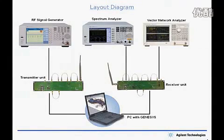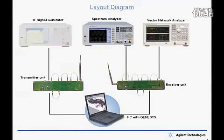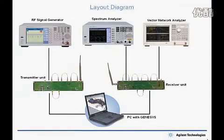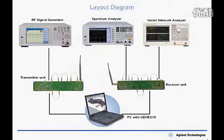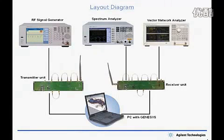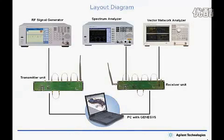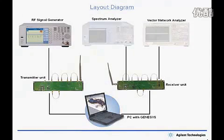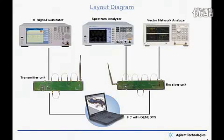The equipment starts with an N9310A RF signal generator, an N9320B RF spectrum analyzer, and an E5061A vector network analyzer. There's a transmitter and receiver unit and Genesis software on the PC. The RF signal generator is used as an input signal to the transmitter unit, and the spectrum analyzer and vector network analyzer are used to measure the output signals on the receiver unit.